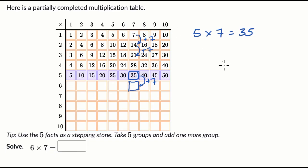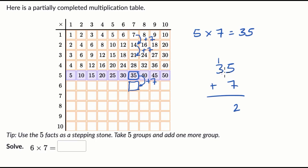So 35 plus seven — we could do that in our head, or we could just write it out. Five plus seven is 12, and then 10 plus 30 is 40, so we get 42. Six times seven is equal to 42.